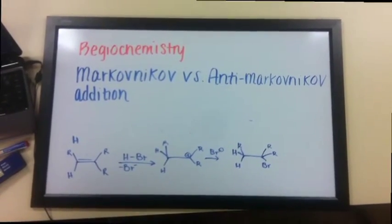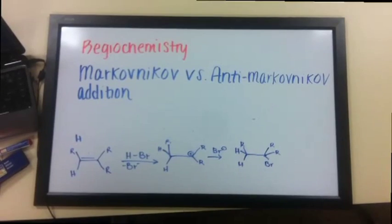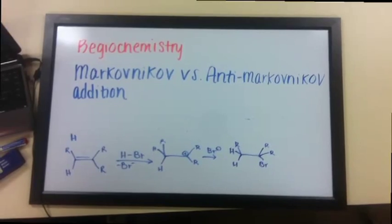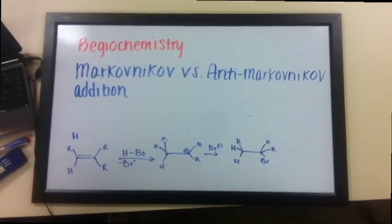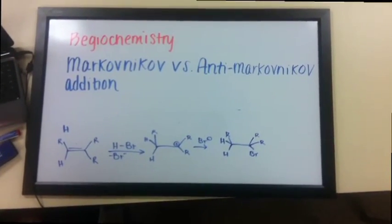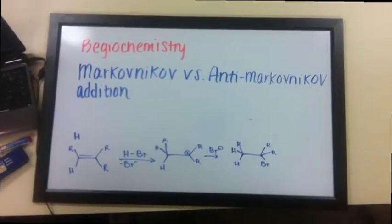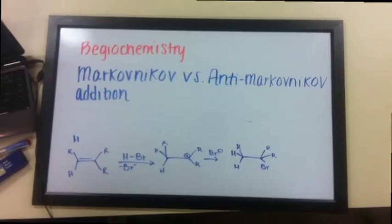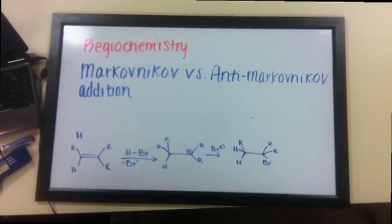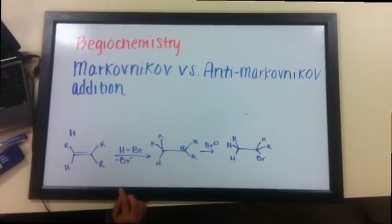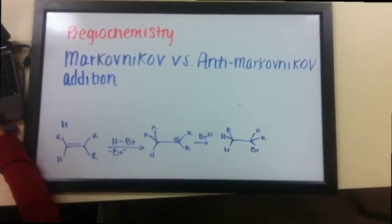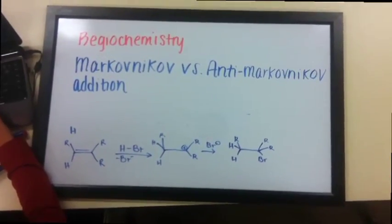Another example of how regiochemistry is used in chemical reaction mechanisms is the Markovnikov vs. Anti-Markovnikov Addition rules. The Markovnikov rule states: when an unsymmetrical alkene reacts with a hydrogen halide to give an alkyl halide, the hydrogen adds to the carbon of the alkene that has the greater number of hydrogen substituents, and the halide adds to the carbon of the alkene with the fewer number of hydrogen substituents. Here I have a hydrobromide and an alkene, and I'm going to demonstrate how the Markovnikov rule is used.